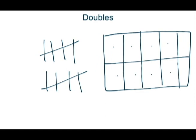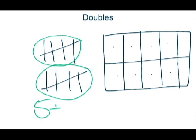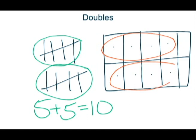In a simple double like this you have five and five and students would solve five plus five equals ten. In this ten frame we have four and four. So four plus four equals eight.